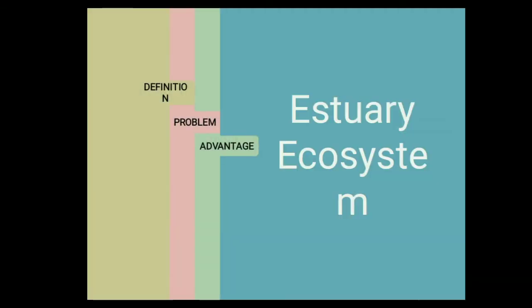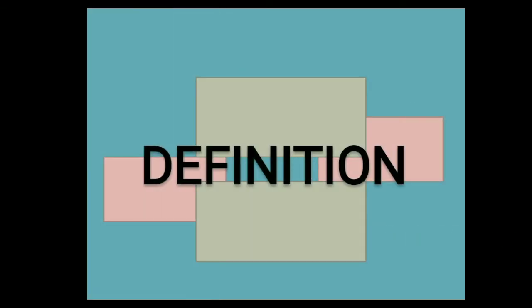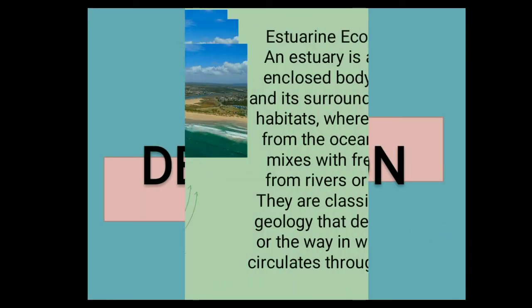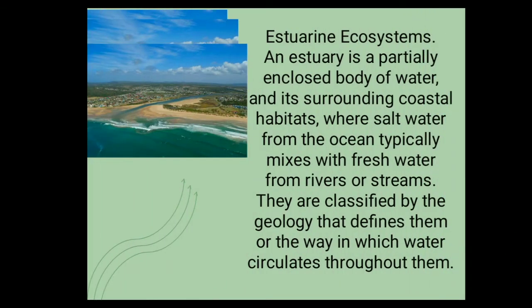Estuary ecosystem has definition, problem, and advantage. Definition: an estuary is a partially enclosed body of water and its surrounding coastal habitats where salt water from the ocean typically mixes with fresh water from rivers or streams. They are classified by the geology that defines them or the way in which water circulates throughout them.